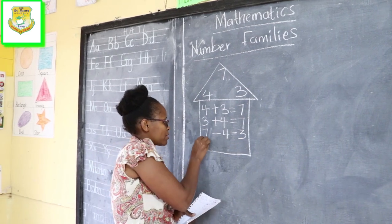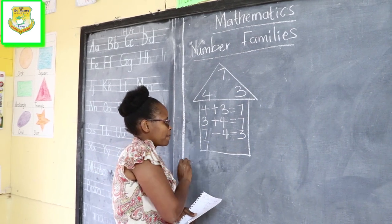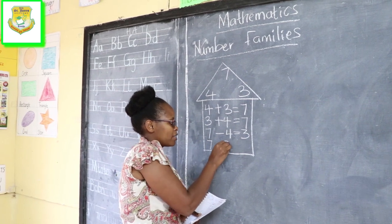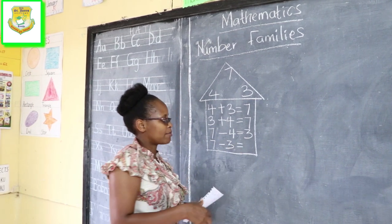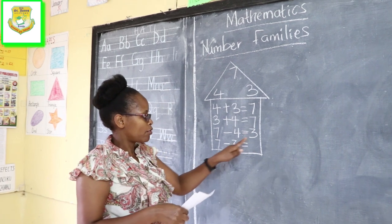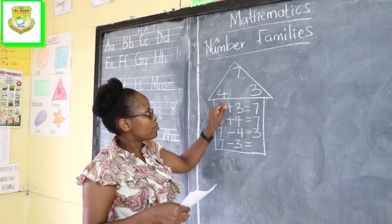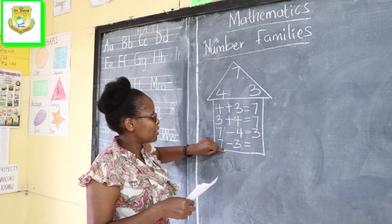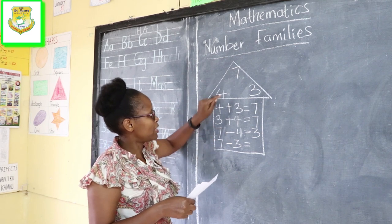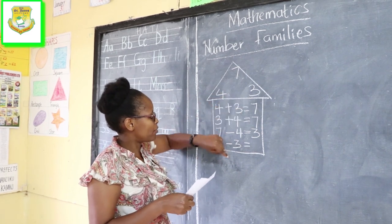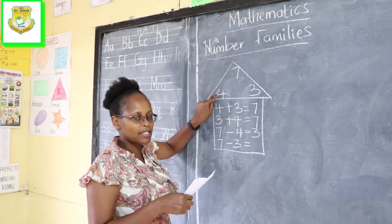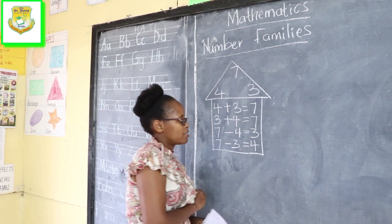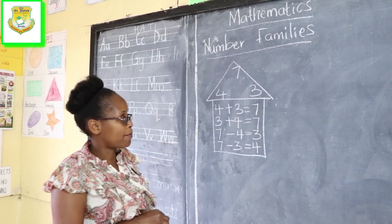Alternatively, we can start with 7 again, take away 3. Our answer will definitely come to 4, because 7 is already represented in our number family and 3 is represented, so the answer we're going to have is 4. That is our first example.